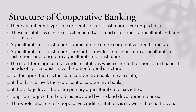Here we have to understand what is the structure of a cooperative bank. Cooperative banking deals with cooperative credit, and this can be classified into agricultural as well as non-agricultural. In the case of agricultural credit, they will give credit mainly to the agricultural sector. These can be further divided into short-term agricultural credit institutions and long-term agricultural credit institutions. The short-term agricultural credit institution deals with the short-term financial needs of farmers, agriculturists, etc.